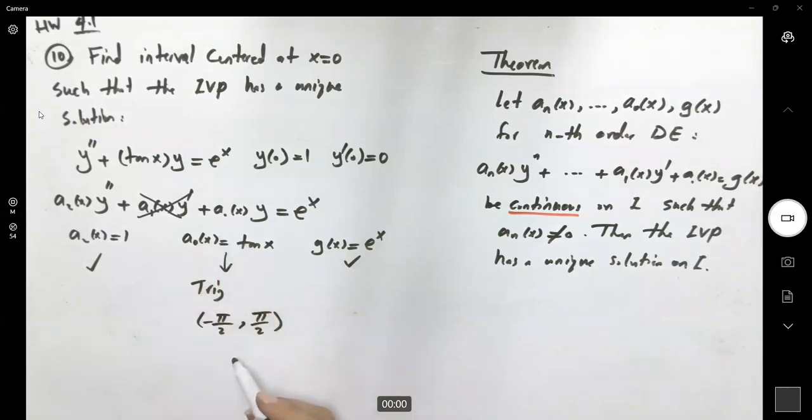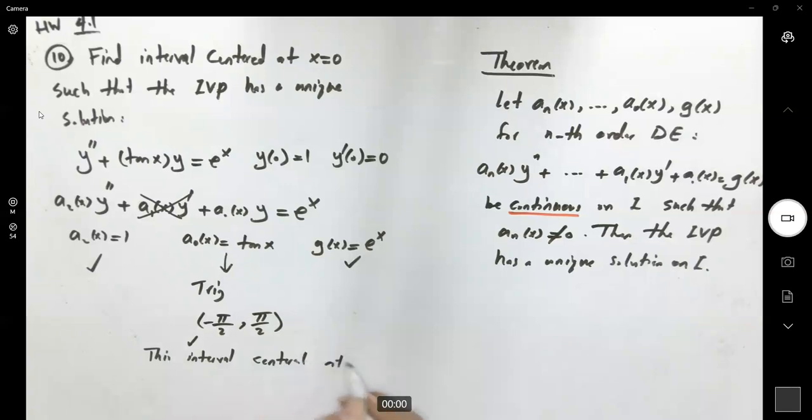By using this interval, which is centered at 0, the function tan(x) is continuous on this interval, and 1 and e^x are continuous everywhere.